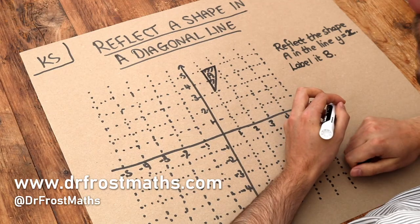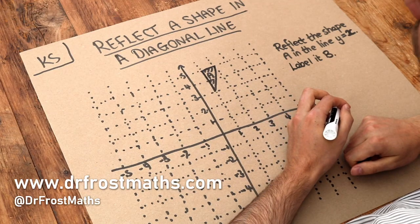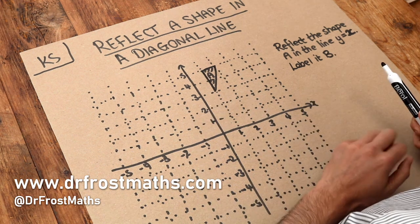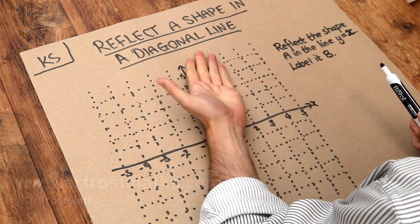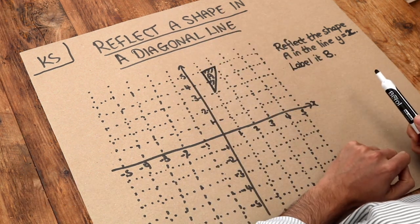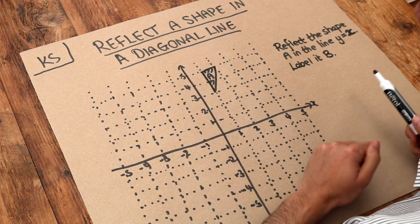Hello and welcome to this Dr. Frost Maths key skill video on reflecting a shape in a diagonal line. A reflection is when you flip something over and we have to specify the line that we're reflecting in.